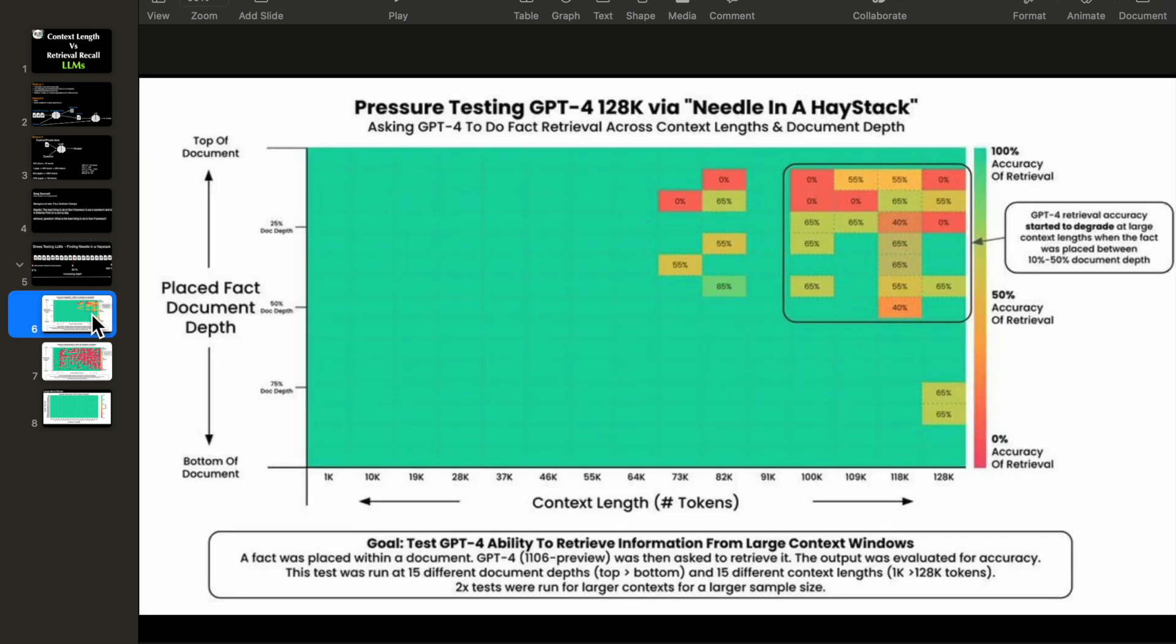Now we provide that context to the LLM and check how good the response is. So in this plot, what we are seeing is this is the context length. For example, let's say we fixed the context length to be 10,000 tokens. So we are looking in this vertical direction. So the context length is fixed.